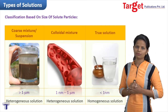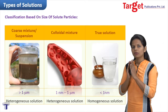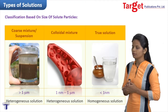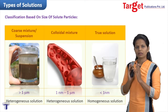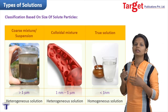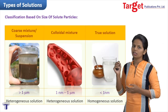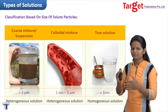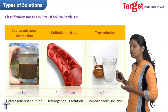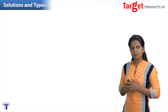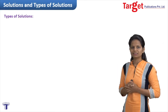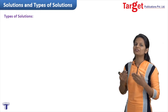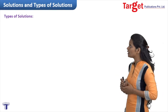The final category of mixture is true solutions, which we are going to study in detail in this chapter. True solutions are solutions in which the size of solute particle is less than 1 nanometer. That means even with a high-power microscope, you can't make out the difference between solute and solvent particles. The simplest example is salt or sugar added in water. Depending on the state of matter of solute and solvent particles, solutions are classified into 9 different categories.